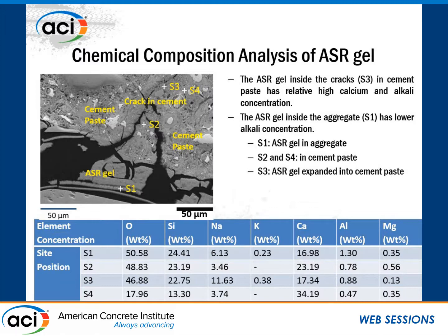S1 is the ASR gel inside the aggregate, where the aggregate has already been dissolved. S3 is the location of ASR gel along the cracks in cement paste. S2 and S4 are the surrounding cement paste. For the ASR gel at location S3, both high silicon content and calcium content can be observed, which demonstrates that both calcium and silicon are needed to generate the destructive ASR gel.